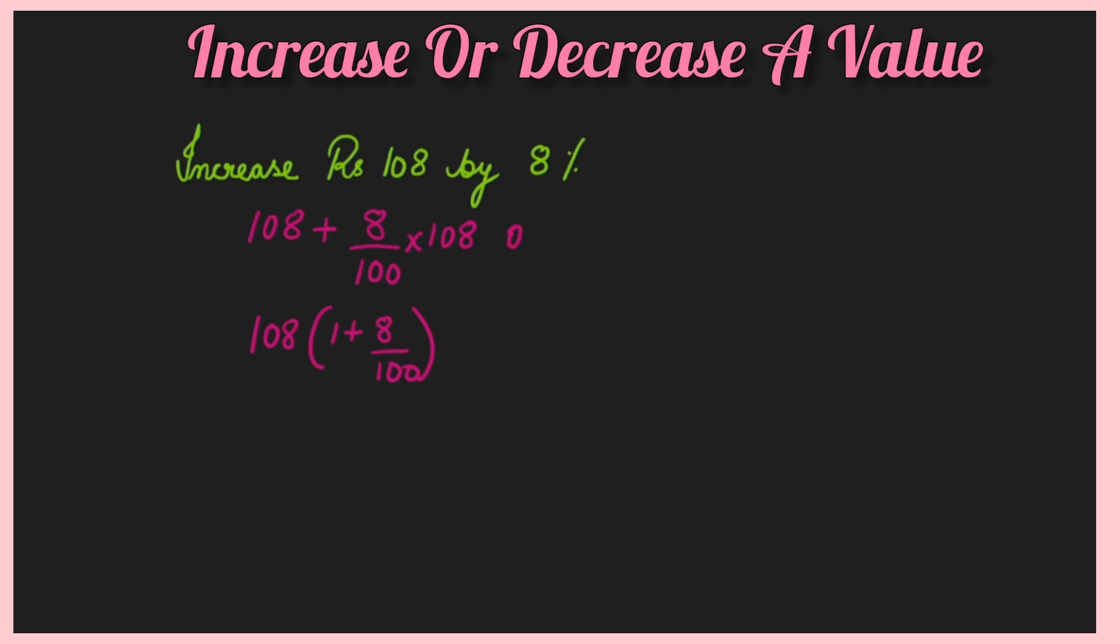So it will become 1 plus 8 by 100. And this inside part, the bracket part, can you do LCM and write down 108 by 100? Yes. So the bracket part is solved, and into 108. Easy. So directly you can bring it to this part and solve your sum. No need of writing the before steps. Directly you can do by using this step.